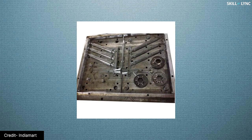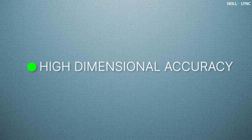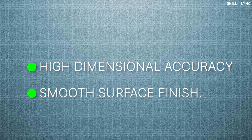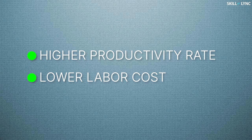Shell molding is an expendable mold casting process in which resin-covered sand is used to manufacture the mold. In this process, a shell-like molding cavity is obtained, because of which this process came to be known as shell molding. Using this process, mechanical parts with high dimensional accuracy and smooth surface finish can be obtained. When compared to sand casting, shell molding has a higher productivity rate and lower labor cost.